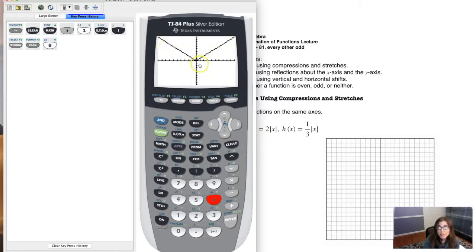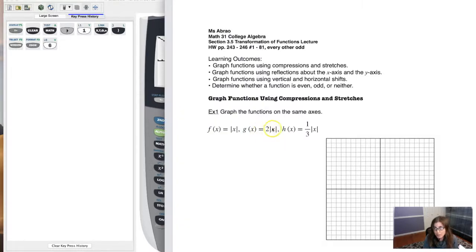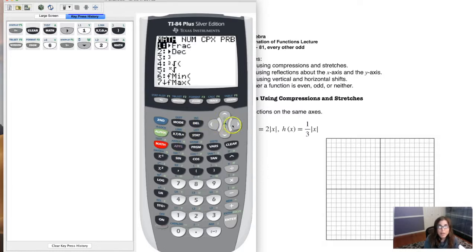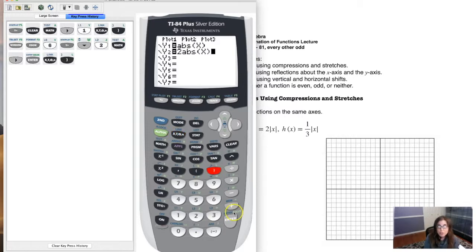So there's our v, right? That's your basic absolute value function. And now I'm going to graph g of x. That's double the absolute value function. So let me go back to my y equals. And now I want to activate y2. So I'll do 2 times the absolute value of x. So 2 and then math over to num, absolute value, x. Close that parentheses.